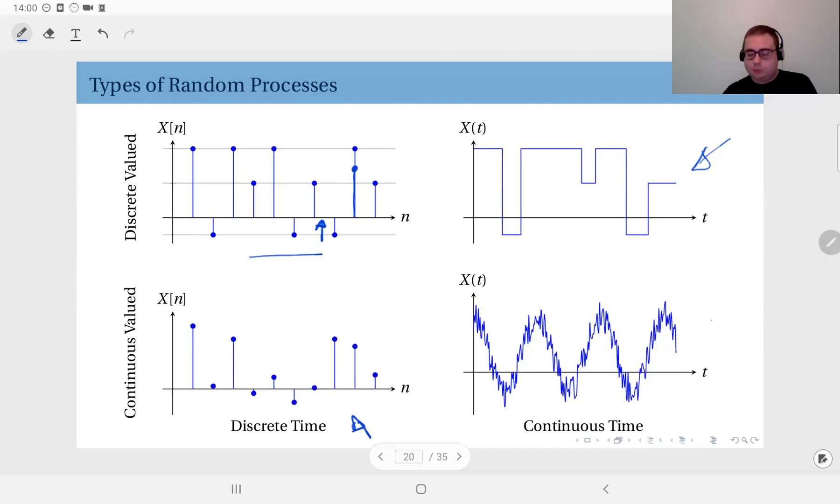And the fourth one, we have the continuous time, continuous valued random process. The best example I can think of is a sort of signal. For instance, it could be a communication signal in a wireless communication medium, or it could be a biomedical signal like an ECG, EEG kind of signal. Anything you can think of that is continuous time, so it takes values across all time instances, and it's continuous valued, it can take any value on the real line. So these are the types of random processes.